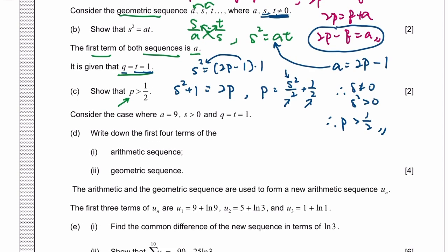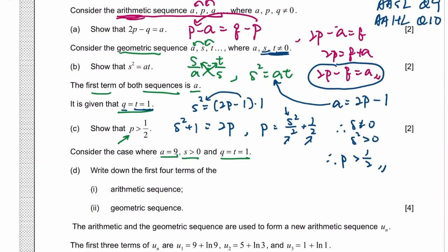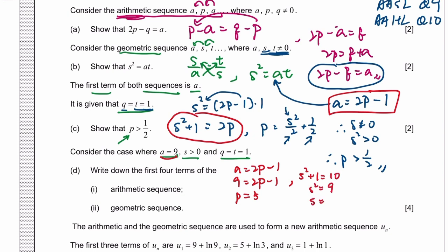Now we know that A is 9 and Q and T are still 1. Oh, and S is bigger than 0 now. Find the first four terms of each sequence. So I think it basically means find P and S. So what do we know? Again, we know this. A is 2P minus 1, but now A is 9. So 9 is 2P minus 1. So 10 would be 2P, so P is 5. Once you know P, if you go to here, S squared plus 1 is 2P, which is 10. So S squared is 9. So S is plus or minus 3, but S is bigger than 0, so S is 3.